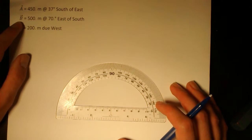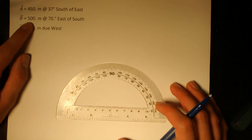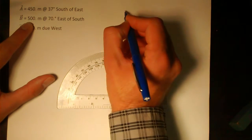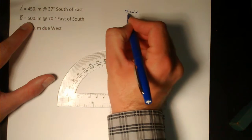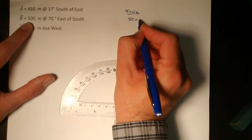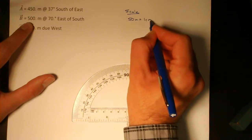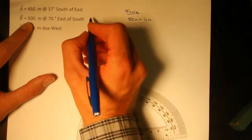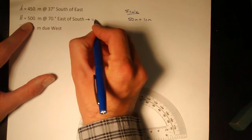Looking at the biggest of the vectors, 500 meters, I think a scale of 50 meters being represented by 1 centimeter on the paper would be a good scale. That would make this vector 10 centimeters long.